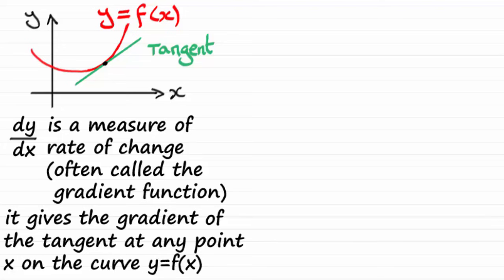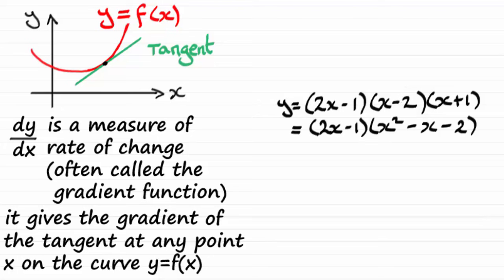I mean we might have a function of x something like this, 2x minus 1 times x minus 2 times x plus 1. And if we were to expand this in the usual way, let's say we expand these last two brackets, we would end up with this. And if I now multiply through by the 2x and the minus 1 and tidy up, I'll end up with 2x cubed minus 3x squared minus 3x plus 2.